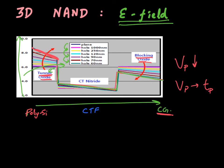This is an advantage of the cylindrical geometry. However, there are some disadvantages as well. When you have charge stored in the charge trap layer, there will again be a higher electric field in the tunnel oxide, which would also enable the stored charge to leak out more easily because of this cylindrical nature of the 3D NAND flash cell.